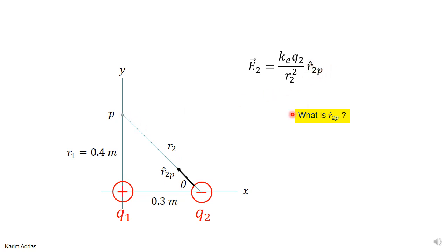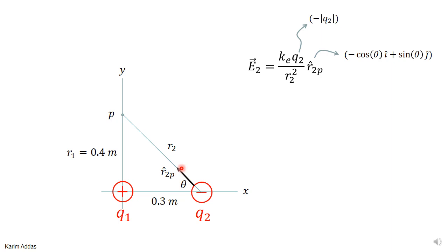Looking at r-hat 2P, it has magnitude 1 with a negative x component and a positive y component. Resolving it like any vector: the x component is minus cosine theta and the y component is plus sine theta. The charge q2 is negative, so it must be written as minus the magnitude of q2.